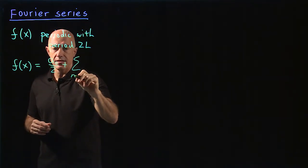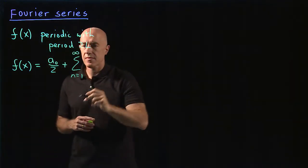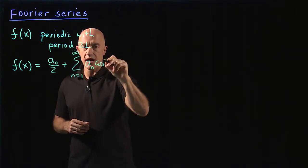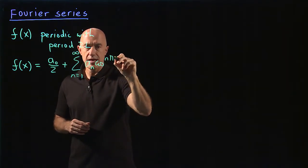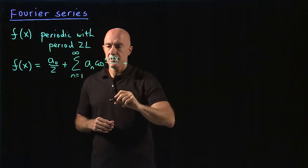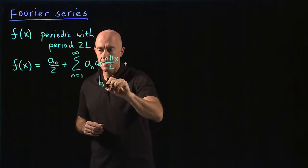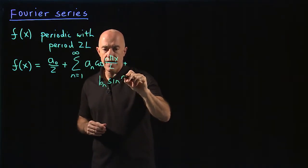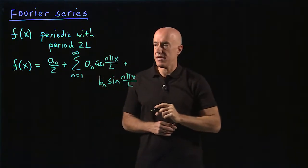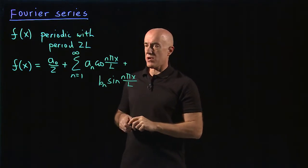The sum from n equals 1 to infinity of these coefficients a sub n times cosine n pi x over l plus b sub n times sine n pi x over l. That's the general form for a Fourier series.